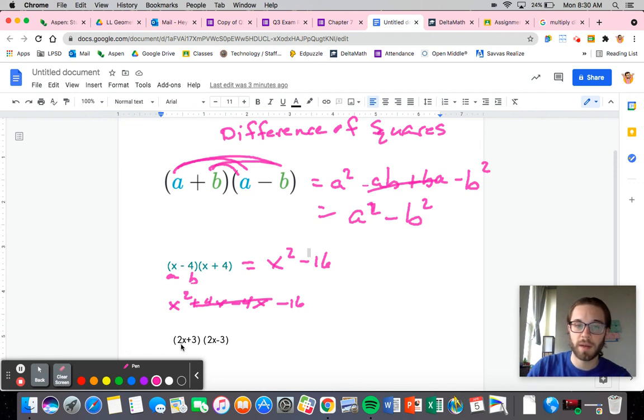Same thing with this one. I'm going to square the first thing. 2x squared is the same thing as 4x squared. And then my b is going to be the 3, so minus 9. And that's it. That's all there is to it. So it is just a shortcut. Obviously, you can get away with multiplying the way you would have always multiplied. It's just a way to try and save you a little bit of time.